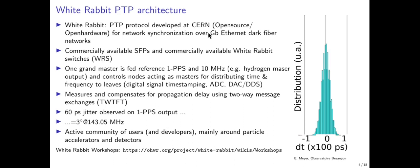At CERN's accelerator in Switzerland, they needed to synchronously measure the beam through the 20 km LHC ring. Synchronizing over that distance would require several hundred microseconds of delay, which is unacceptable. They developed a two-way compensation scheme using a gigabit Ethernet dark fiber network, compensating for propagation duration using commercial small form-factor pluggable transceivers and gigabit Ethernet optical transceivers. These are now available as commercially available White Rabbit switches.